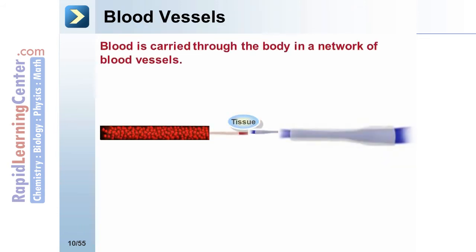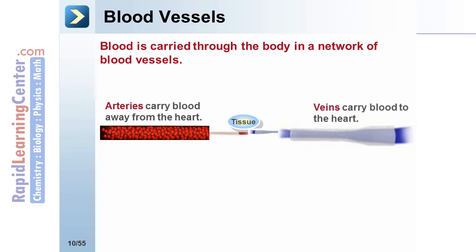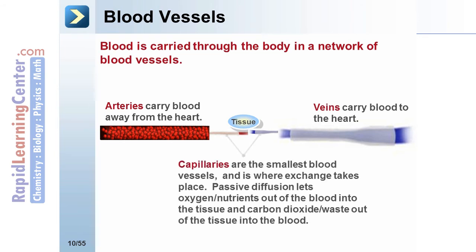Blood is carried through the body in a network of blood vessels. Arteries carry blood away from the heart; veins carry blood to the heart. Capillaries are the smallest blood vessels where exchange takes place. Passive diffusion lets oxygen and nutrients out of the blood into the tissue, and carbon dioxide and waste out of the tissue back into the blood.